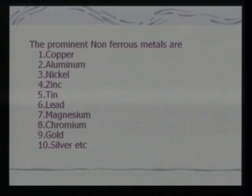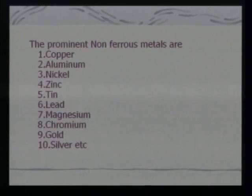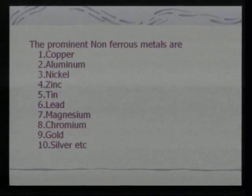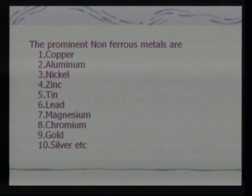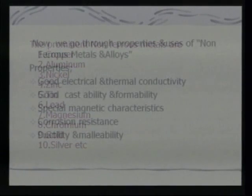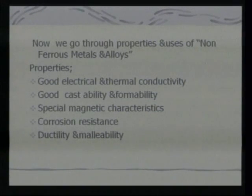The prominent non-ferrous metals are copper, aluminum, nickel, zinc, tin, lead, magnesium, chromium, gold, silver, etc. Now we go through the properties and uses of non-ferrous metals and alloys. Properties include good electrical and thermal conductivity — they can easily conduct electrical power as well as heat.